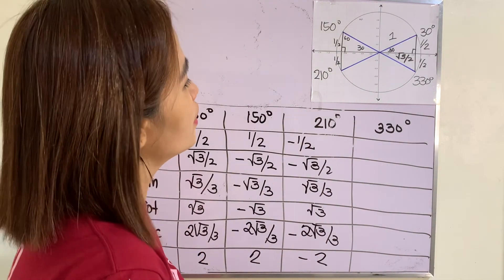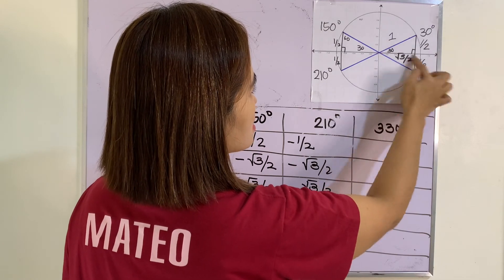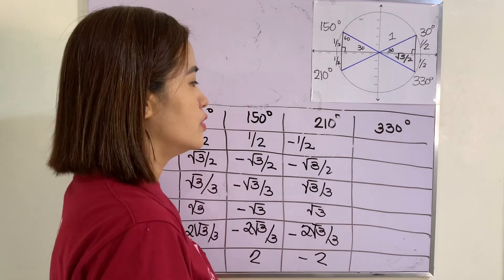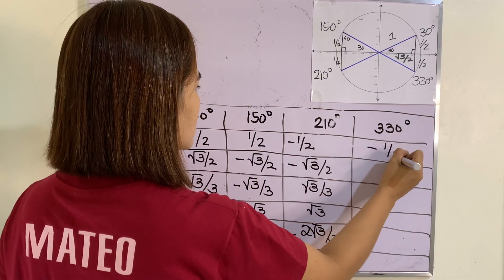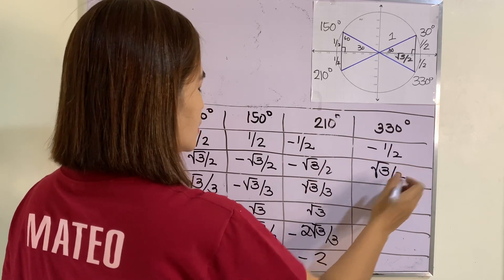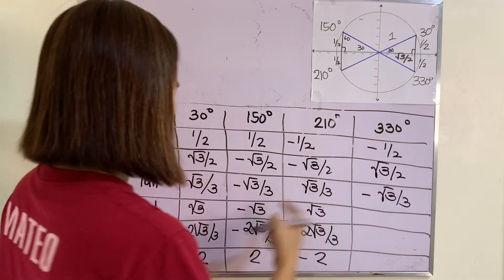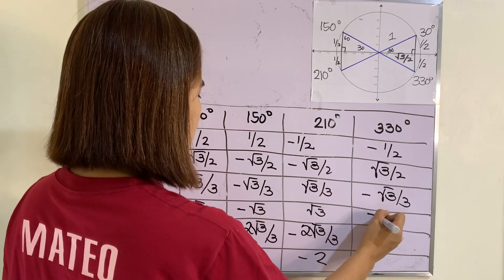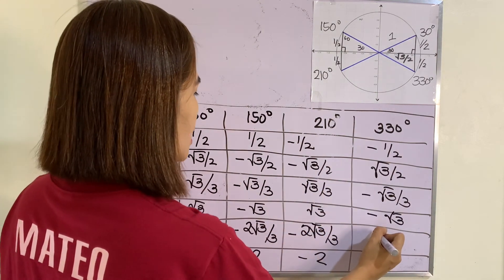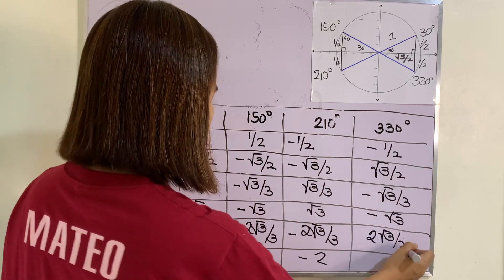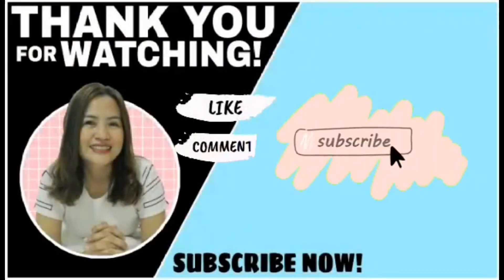For 330 degrees: x is positive and y is negative in the fourth quadrant. So sine of 330 equals negative one half, and cosine equals positive square root of 3 over 2. Tangent is negative square root of 3 over 3, cotangent is negative square root of 3, secant is 2 square root of 3 over 3, and cosecant is negative 2.